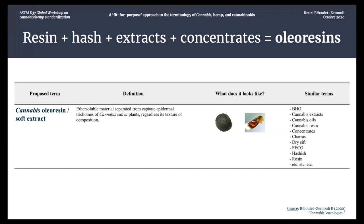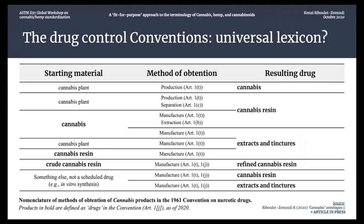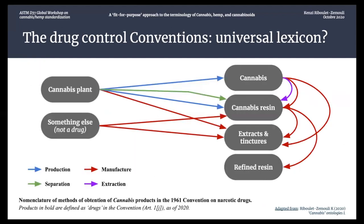Within cannabis oil-resins, we could subdivide and differentiate on the basis of evidence by referring to their methods of obtention — methods of concentration, extraction, separation, purification, etc. This is what we actually want to know about a product more than its brand name — 'it's an oil,' 'it's a concentrate,' 'it's a dry sift.' We might be more interested to know how it was exactly obtained: with solvents or not, what kind of solvents, at what temperature. The international drug control conventions tried to provide assistance on that but unfortunately failed.